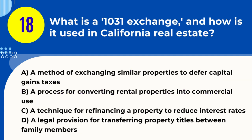Question 18. What is a 1031 exchange, and how is it used in California real estate? A. A method of exchanging similar properties to defer capital gains taxes. B. A process for converting rental properties into commercial use. C. A technique for refinancing a property to reduce interest rates. D. A legal provision for transferring property titles between family members. Answer: A. A method of exchanging similar properties to defer capital gains taxes.